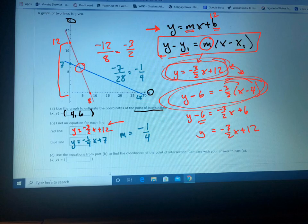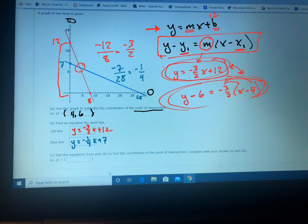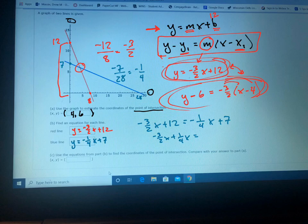If you remember this from algebra 1, the way you find where two lines intersect is you take the equations and in this case you just set them equal to each other. So negative three halves X plus 12 equals negative one fourth X plus 7. Now we move the X's to one side, so negative three halves X plus one fourth X, move the 12 to the other side, equals 7 minus 12.